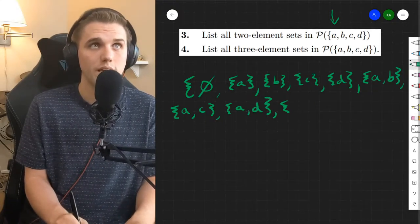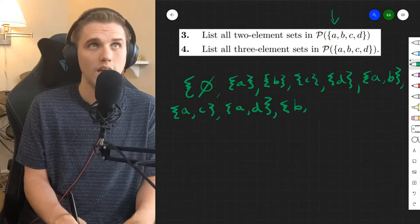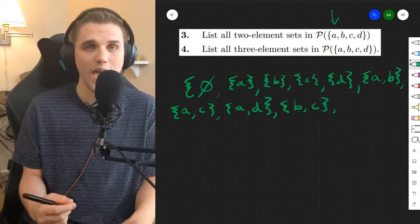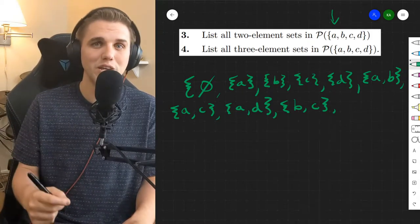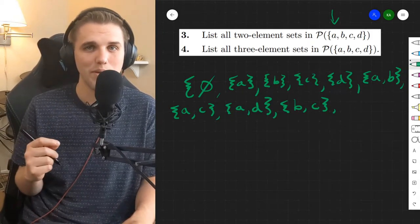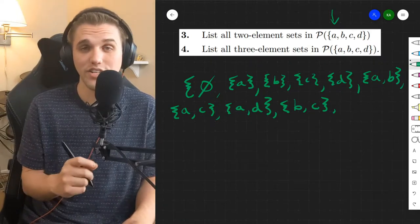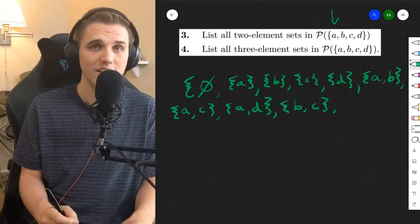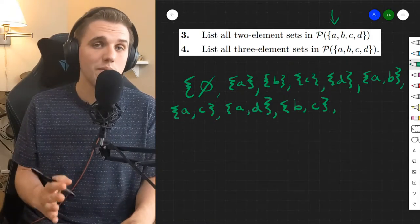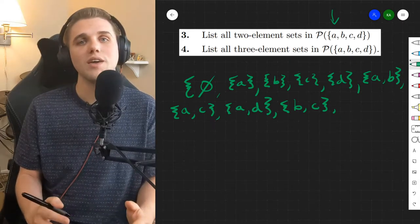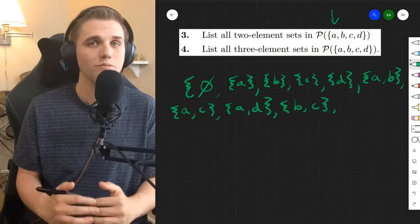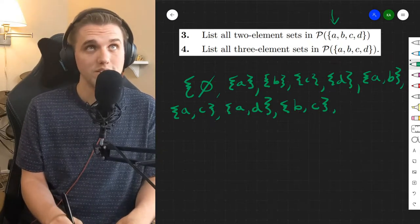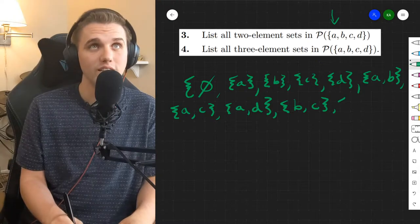So we skip that {b, a} and we go straight to {b, c}. We can't do {b, b} because we can't pull out the element b twice. We can only pull out the element b once. With every set you can only have at most one copy of each element. That would be a multi set.